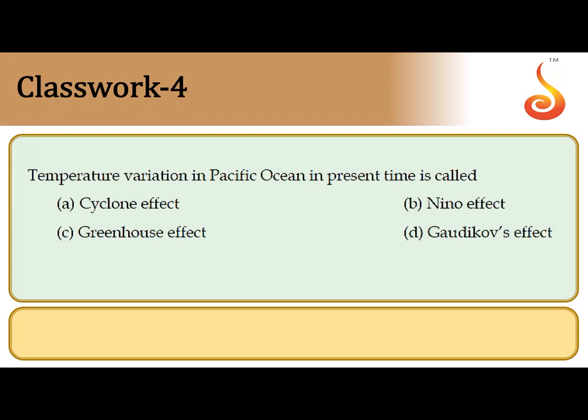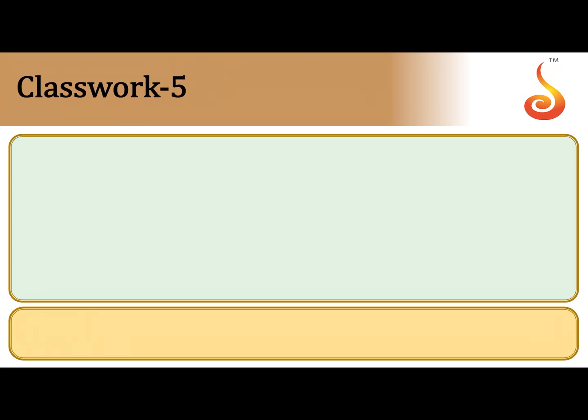The fourth question: temperature variation in the Pacific Ocean. Along the western coast of South America, towards the western Pacific Ocean, there are sudden temperature changes where the oceanic water becomes warm once a year. This is referred to as the El Niño effect, associated with odd climatic changes linked to global warming and the greenhouse effect. The correct answer is the second option: El Niño effect.